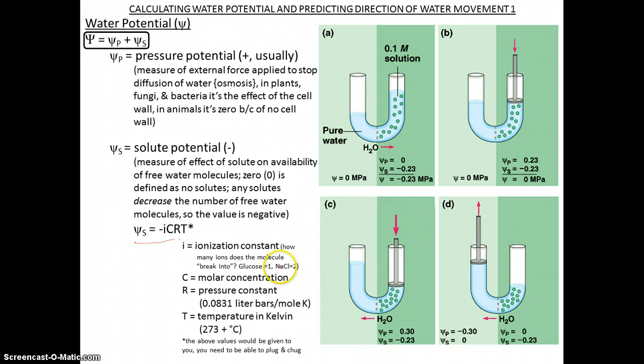C is the molar concentration, usually represented by M for molarity. R is a constant, the pressure constant, 0.0831 liters bars per mole per Kelvin. And then temperature is in Kelvin. If you're given a temperature in Celsius, you convert it to Kelvin by adding 273.